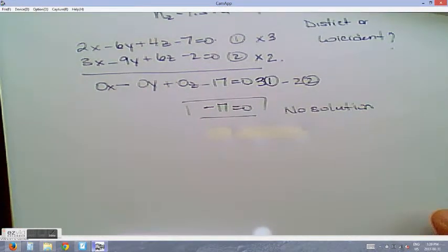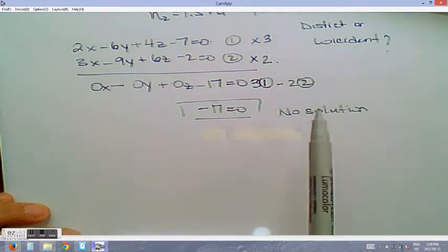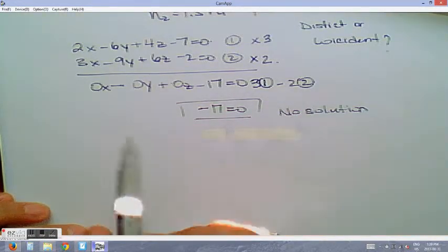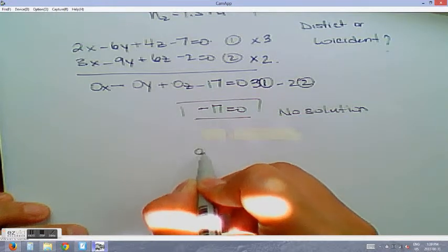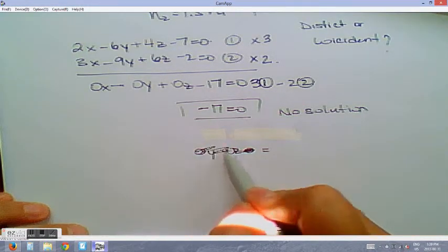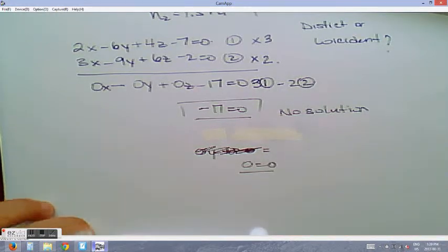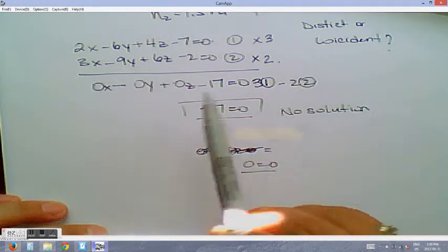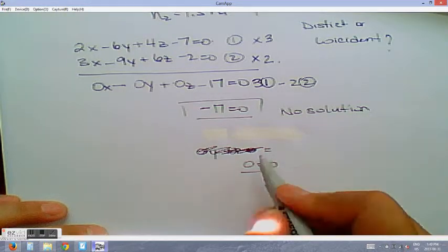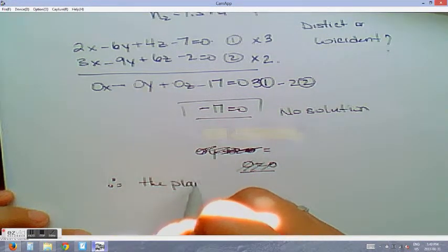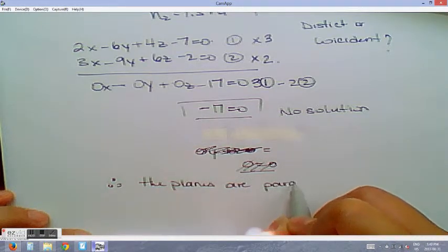What would it look like if we had an infinite number of solutions? In that case, everything cancels out and you get 0 equals 0. But here we have something that can't exist — we can't say negative 17 equals 0. That's impossible, so there's no solution. Therefore the planes are parallel and distinct.